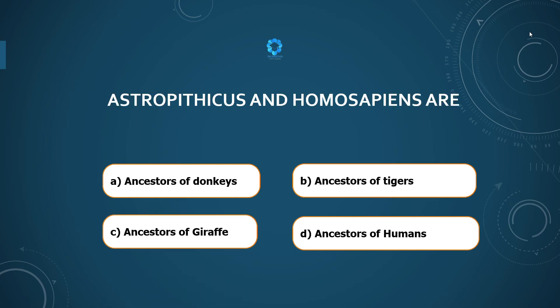Australopithecus and Homo sapiens are ancestors of donkeys, ancestors of tigers, ancestors of giraffes, or ancestors of humans?